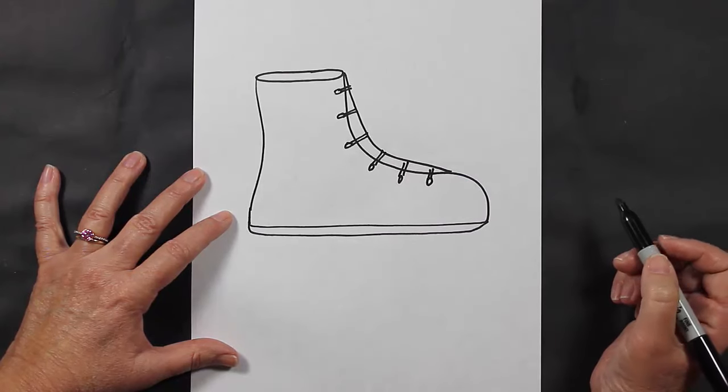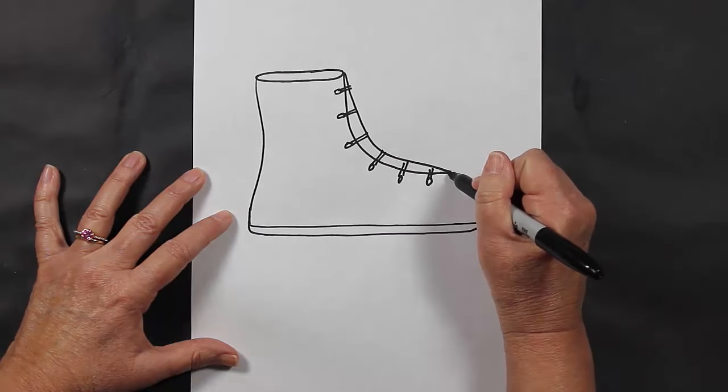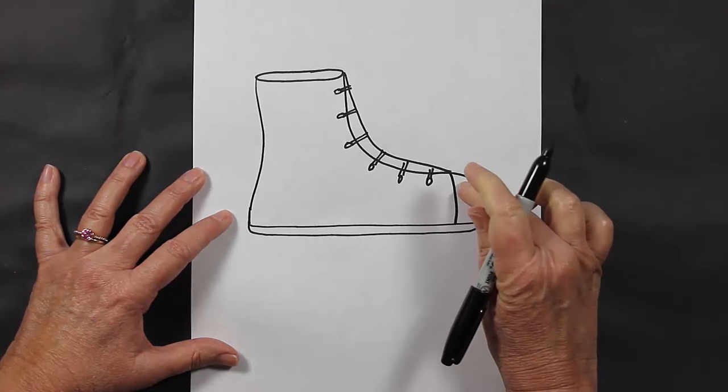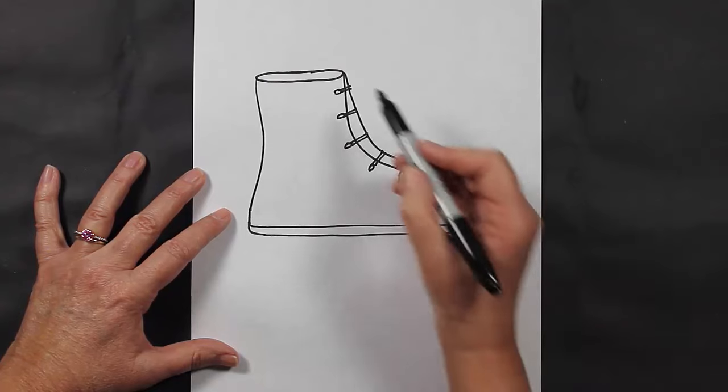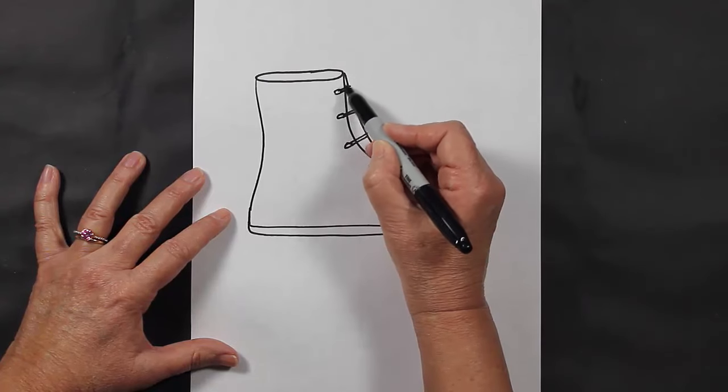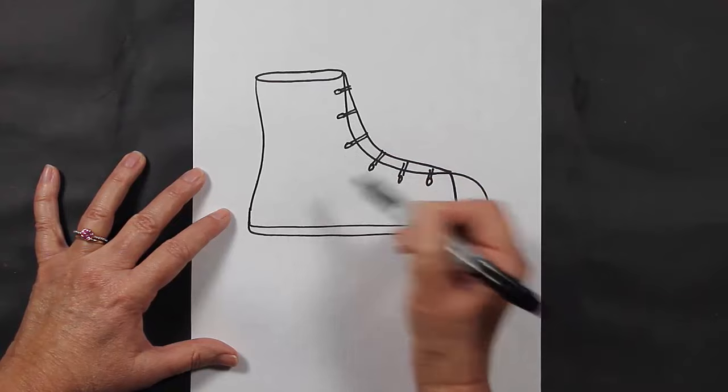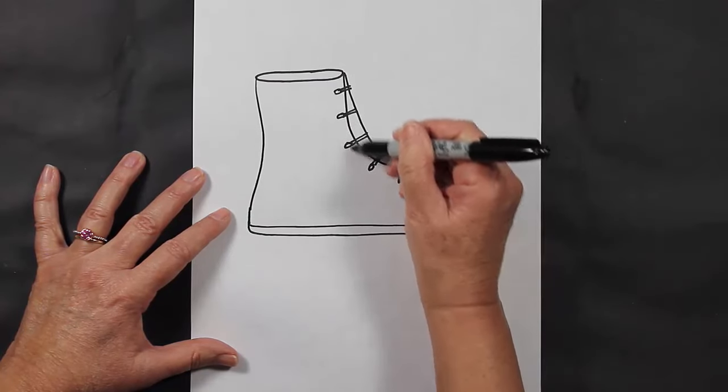Sometimes with a tennis shoe you have a little area right here where there's a little bit of rubber. If you'd like to put a bow up here at the top for the laces, you can do that right here. Maybe have the laces come down a little bit—I like mine to just stay like this, but it's up to you.